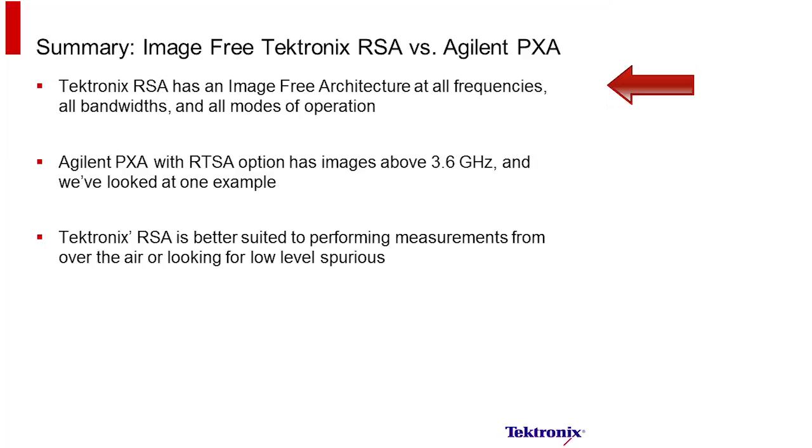Compared to the Agilent PXA with its RTSA option, there are images above 3.6 gigahertz, and we've looked at one example. We can say that Tektronix RSA is better suited to performing either over-the-air measurements or for looking at low-level spurious signals. I thank you for your time.